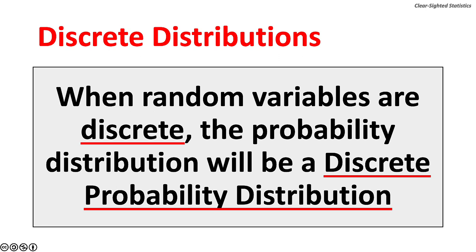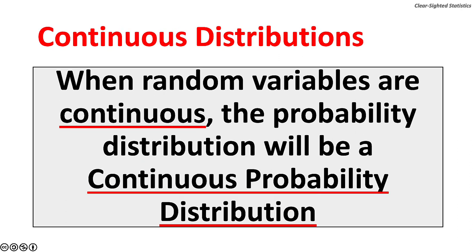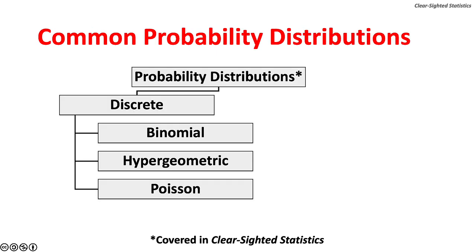When the random variables are discrete, the probability distribution will be a discrete probability distribution. When the variables are continuous, the probability distribution will be a continuous probability distribution. The three common discrete probability distributions covered in clear-sighted statistics are binomial, hypergeometric, and Poisson.